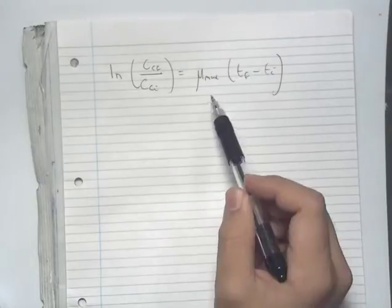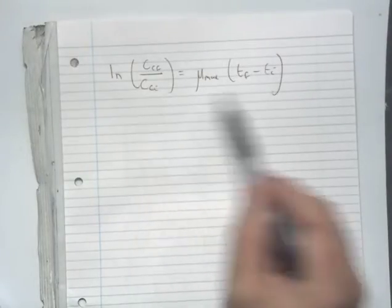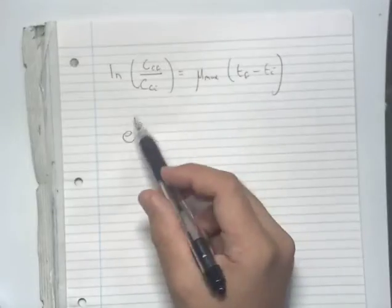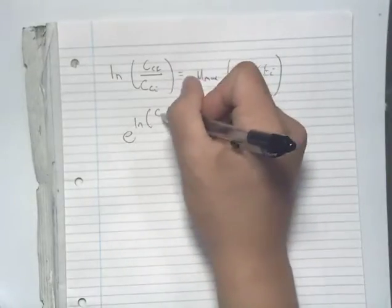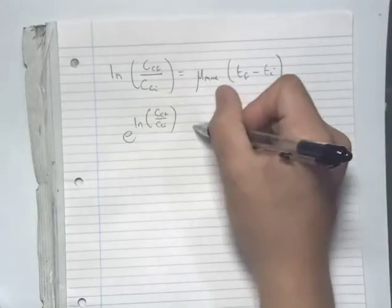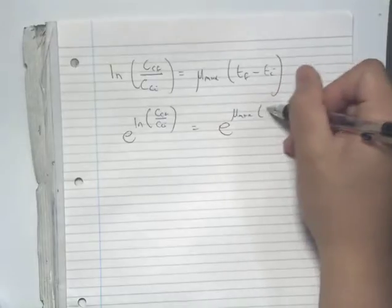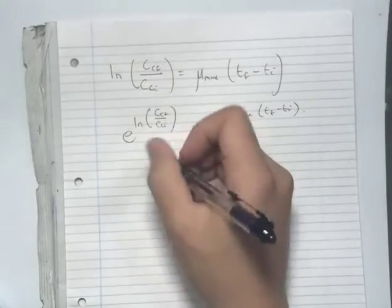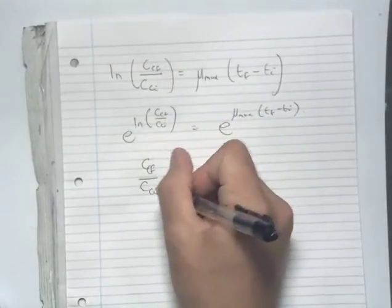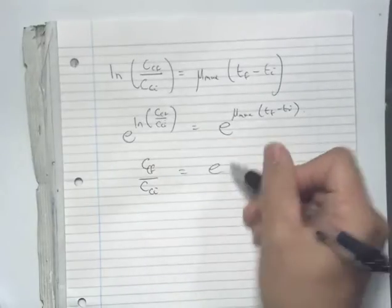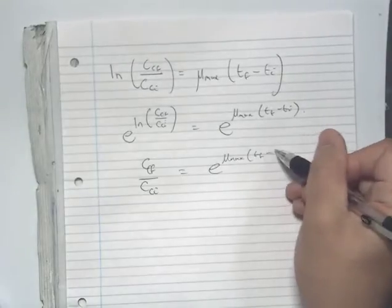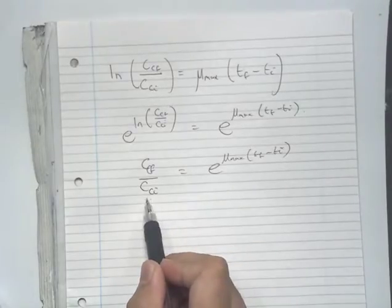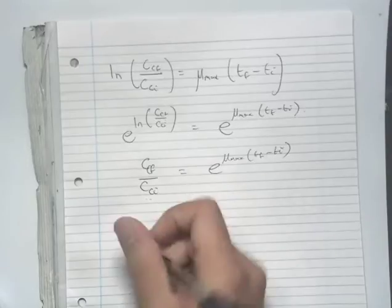By putting both sides to the exponent, we can rearrange for our final concentration. Putting everything to the power of e on both sides, we get c_f over c_i is equal to e to the power of mu_max times (t_final minus t_initial). This simplifies to c_f is equal to c_i times e to the power of mu_max times (t_final minus t_initial).